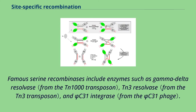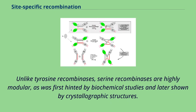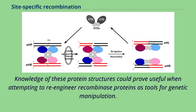Famous serine recombinases include enzymes such as gamma-delta resolvase, TN3 resolvase, and phi-C31 integrase. Although the individual members of the two recombinase families can perform reactions with the same practical outcomes, the families are unrelated to each other, having different protein structures and reaction mechanisms. Unlike tyrosine recombinases, serine recombinases are highly modular, as was first hinted by biochemical studies and later shown by crystallographic structures. Knowledge of these protein structures could prove useful when attempting to re-engineer recombinase proteins as tools for genetic manipulation.